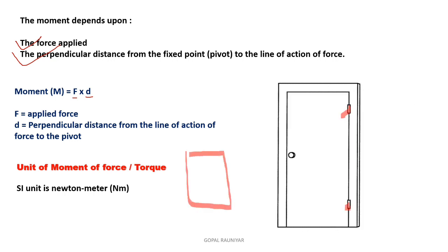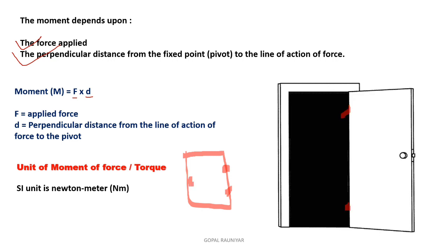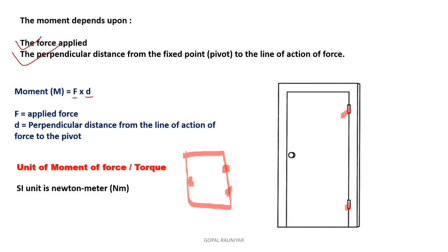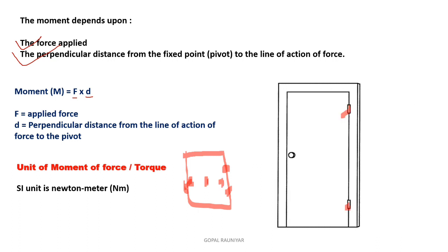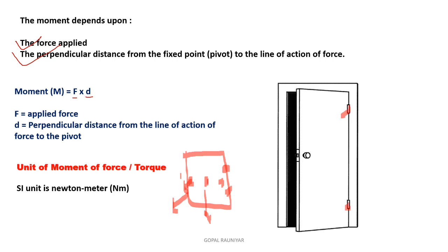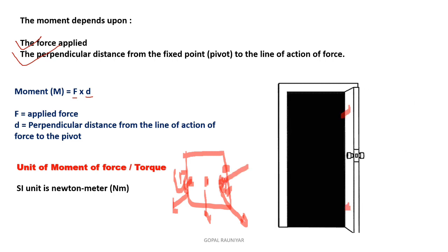The handle of a door is always placed at the maximum distance from the fixed point to produce maximum torque. Try an experiment: try to open your door from the middle point or from near the hinge. If you open from near the hinge, you have to apply maximum force. If you open from the handle at the edge, the distance is maximum and you apply minimum force. The greater the distance from the pivoted point, the less force is required.